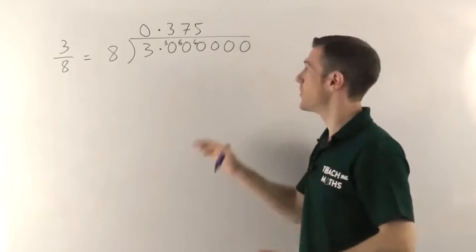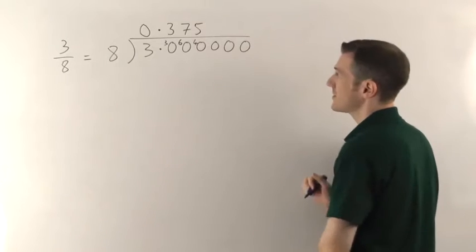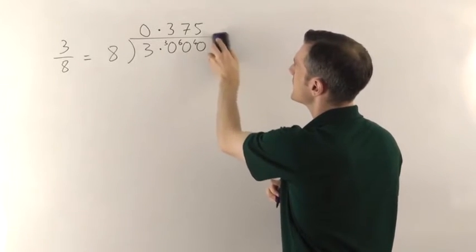So when you have a 0 remainder you can just stop. And we don't need any of these other zeros on the end. You can leave them there. It doesn't really make any difference but we don't need any of that.